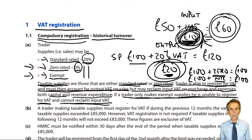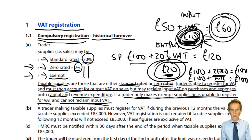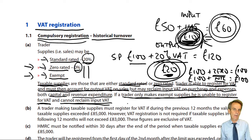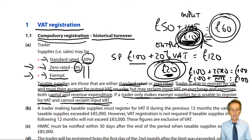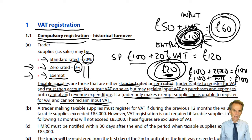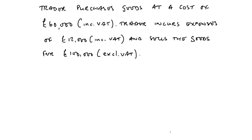Output VAT on the sales, recover input VAT on our purchases. If output VAT exceeds input VAT, we pay over through the VAT return system to HMRC. If input VAT exceeds output VAT in relation to our taxable supplies, then we'll get money back from HMRC. Here's a little example.